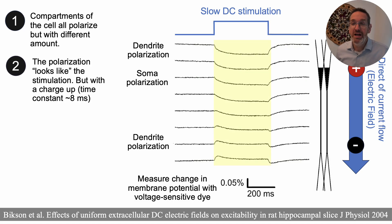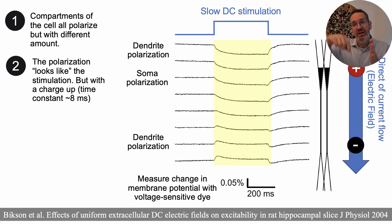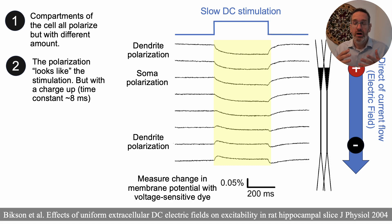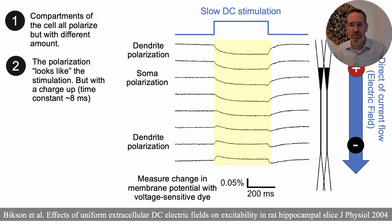Lesson number two: the polarization tends to look like the stimulation waveform. The stimulation was turned on for a while and the cell polarized for that same amount of time. If we left the stimulation on for 10 minutes, it would have been polarized for 10 minutes. If we oscillate the stimulation up and down, the cell membrane will also oscillate. At a first approximation, there is relatively simple tracking between the polarization and the waveform we put in — that's why waveform matters. It's not a perfect tracking; there's a bit of charge time when you first turn the field on, but that's why waveform matters.